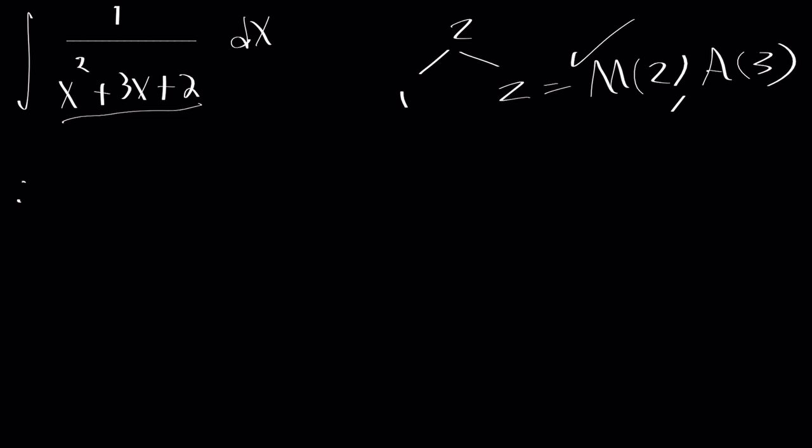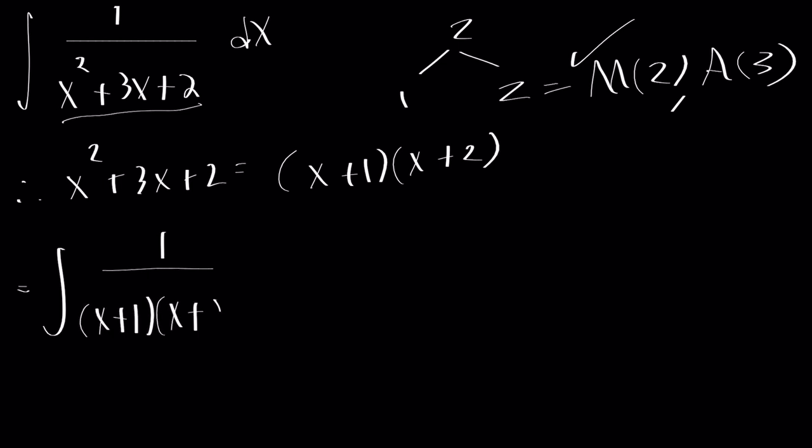So then therefore, x squared plus 3x plus 2 can factor into x plus 1 times x plus 2. And we could use that to our advantage. So this is equal to the integral of 1 over x plus 1 times x plus 2 dx.